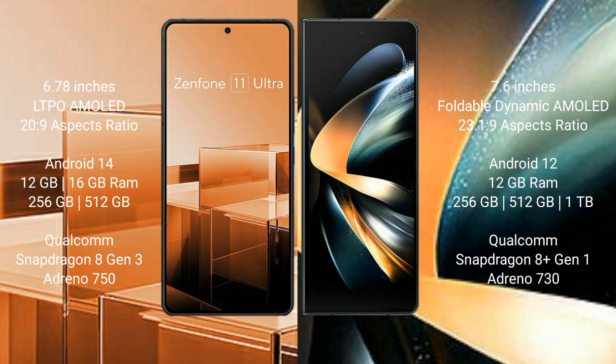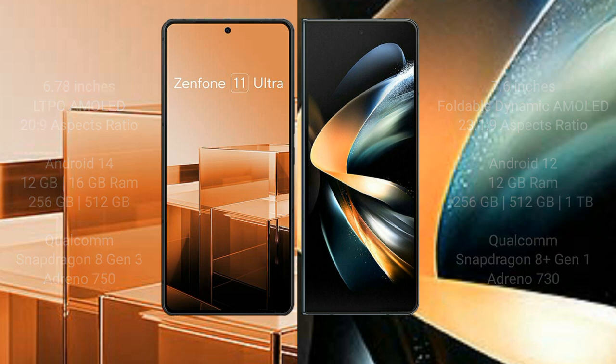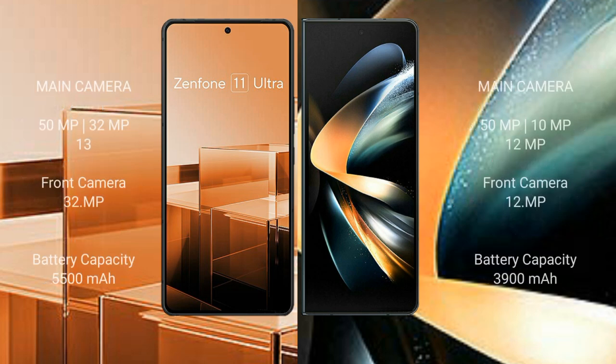Asus Zenfone 11 Ultra comes with 12GB, 16GB RAM, 256GB and 512GB internal storage, Qualcomm Snapdragon 8 Gen 3 processor, and Adreno 750 GPU. Samsung Galaxy Z Fold 4 comes with 12GB RAM, 256GB, 512GB, and 1TB internal storage, Qualcomm Snapdragon 8 Gen 1 processor, and Adreno 730 GPU.